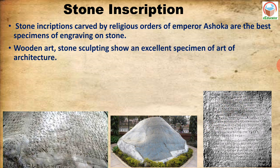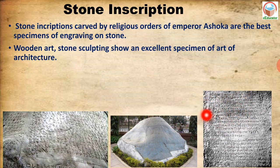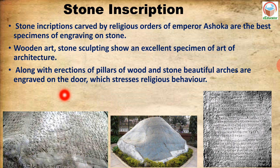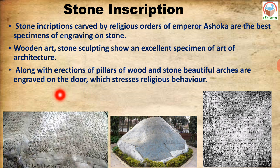Even wooden art was practiced — engraving on wood was also done, showing excellent specimens of art and architecture during Ashoka's time. Along with the erection of pillars and wooden structures, beautiful stone arches were also carved. Beautiful entrance arches were made during the Mauryan period, with carvings at the entrances of temples and palaces depicting religious themes.